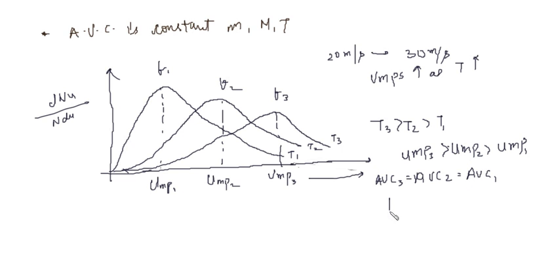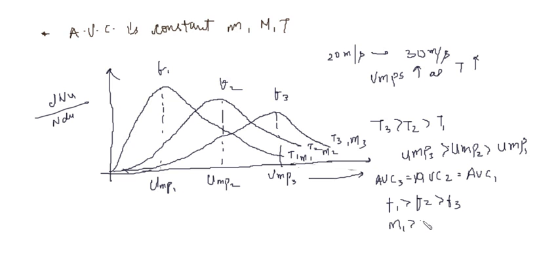Now if we have different molecular masses M3, M2, M1, the relationship is M1 > M2 > M3. So as we increase the temperature, the fraction increases accordingly. That's how we study the Maxwell distribution — as we increase temperature, we see how the fraction is increasing.